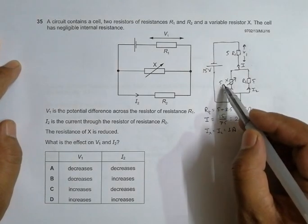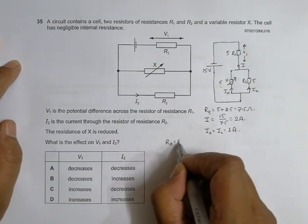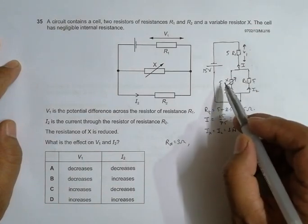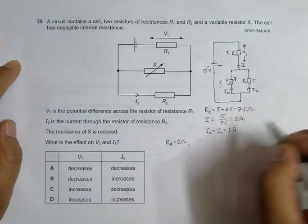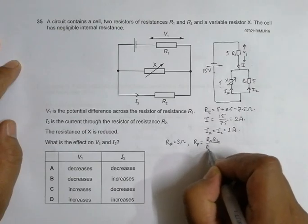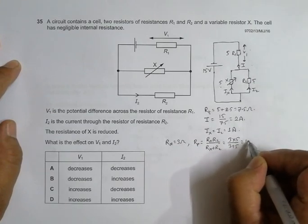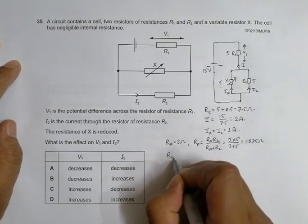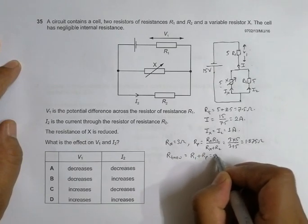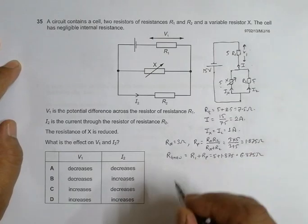Now, let us say this 5 has decreased and it becomes, Rx becomes equal to 3 ohm. So if it is 3 ohm, then the parallel of this thing will be equal to R parallel equal to Rx R2 divided by Rx plus R2 equal to 3 into 5 by 3 plus 5, and that's equal to 1.875 ohm. Which gives us R total new is equal to R1 plus Rp equal to 5 plus 1.875 and that's equal to 6.875 ohm.